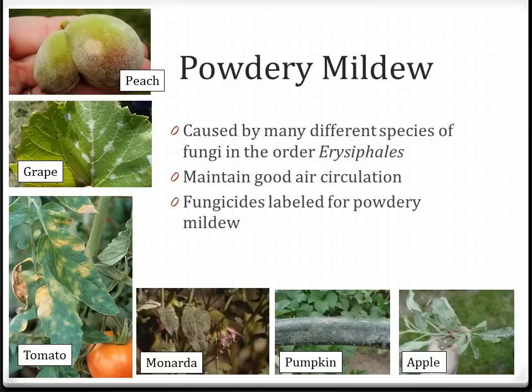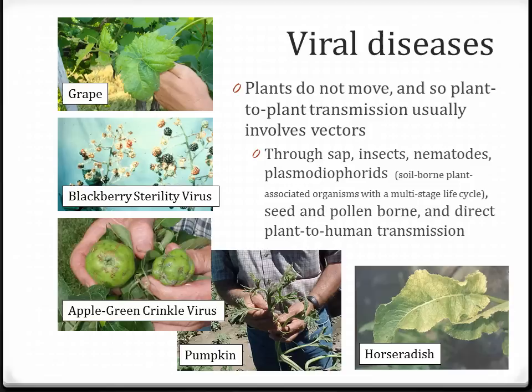Powdery mildew has a very large host range, and when conditions are good, lots of plants will develop it. For example, cornus or dogwoods will get powdery mildew as well, though I don't have a picture of it here — but it looks somewhat similar to what you're seeing in these images.